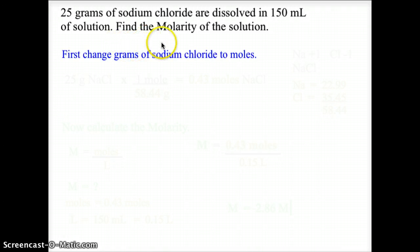First, we need to convert grams of sodium chloride to moles. To change grams to moles, we need the gram formula mass. Sodium is a +1 ion, chlorine is a -1 ion, so the molecule sodium chloride is NaCl in a 1 to 1 ratio.